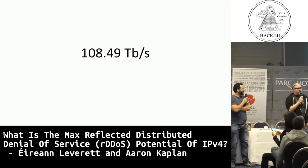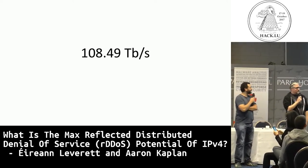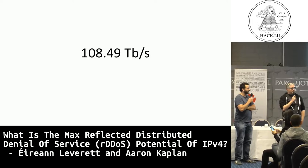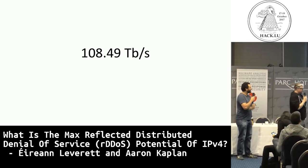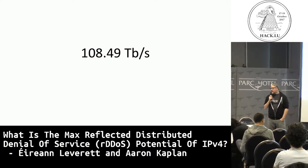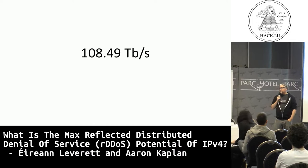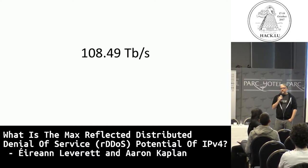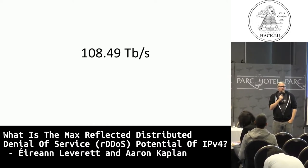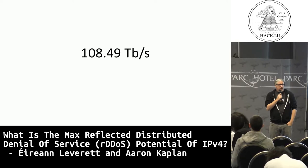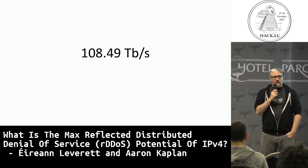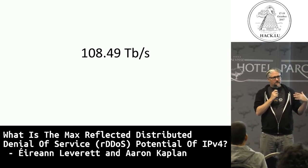108.49 terabits per second - yes, terabits per second. This is a number that we talked about a while back. Before we did the research, we wanted to know what the maximum DDoS of the internet was. Someone asked me a few years ago, and we'll say a little bit about why we calculated that in later slides.